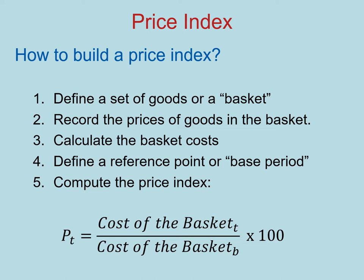Number one, you need to define a set of goods or a basket to track. Two, you record the prices of goods in the basket at the period that you are interested in. Number three, you calculate how much it would cost you to purchase that basket at current prices. Four, you need to define a reference point or base period. We're going to use that for comparisons of different values of the cost of the basket across time. And then you compute the price index for as many periods as you have collected data. Let's take the reference point of the period T.